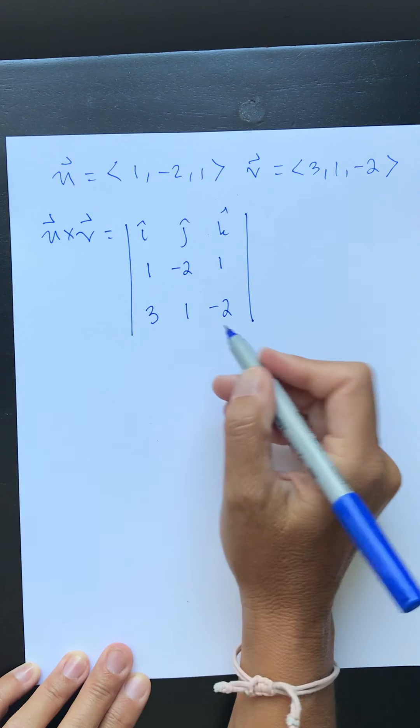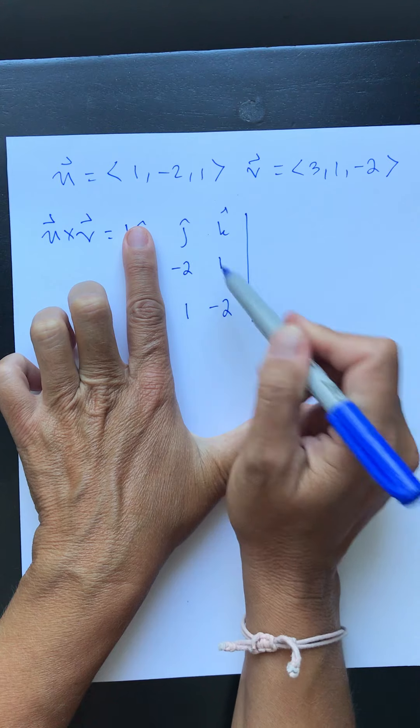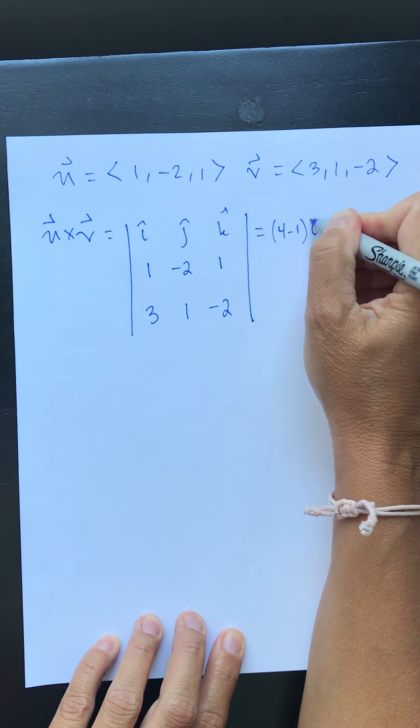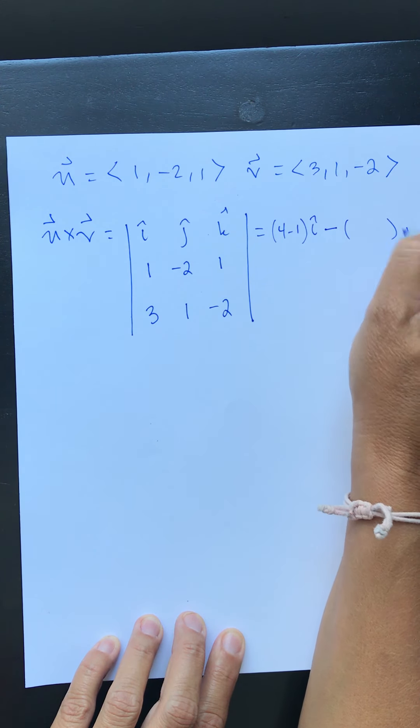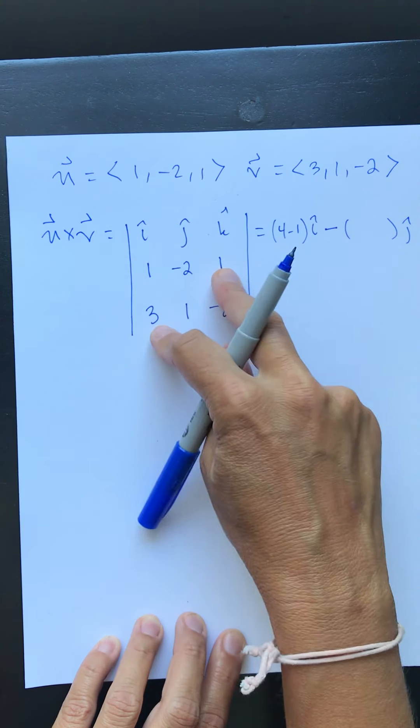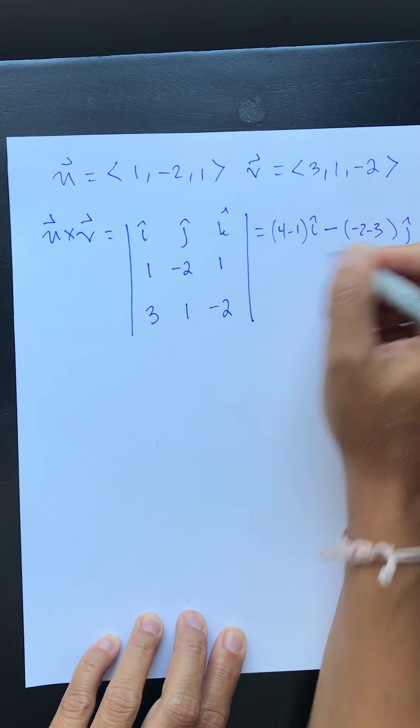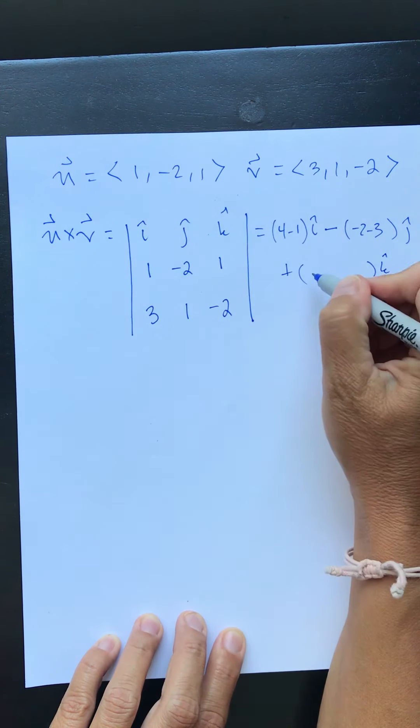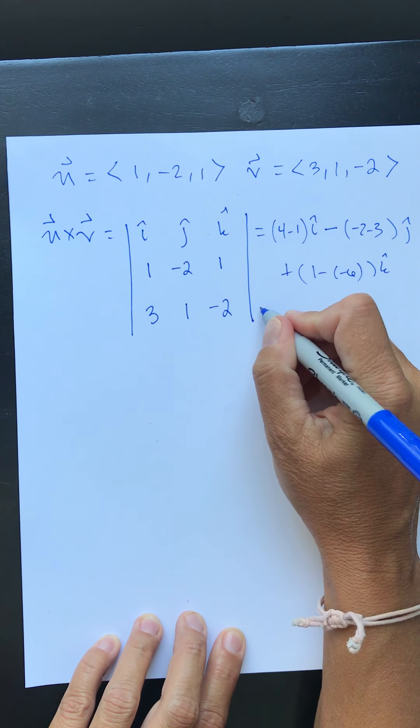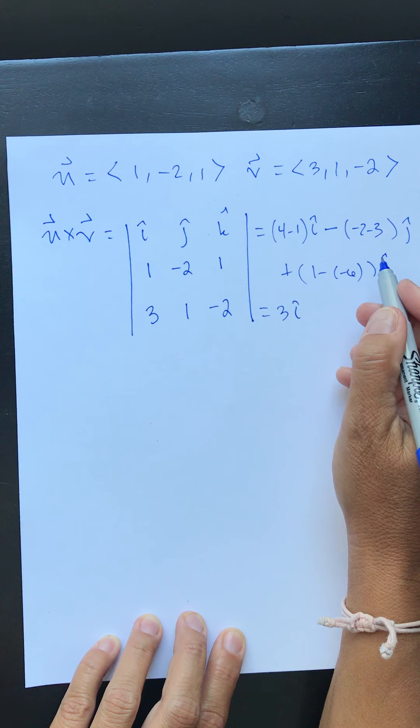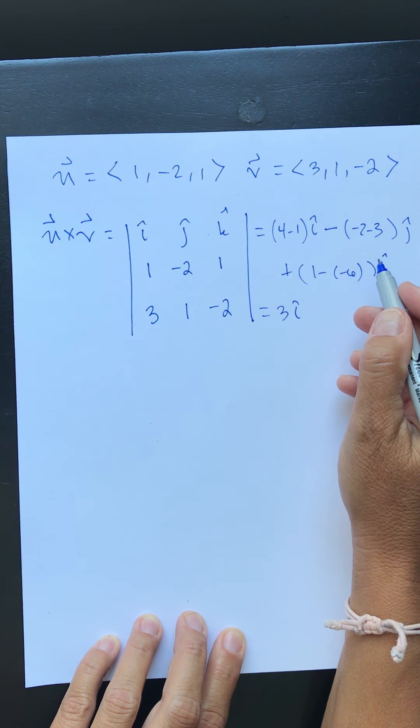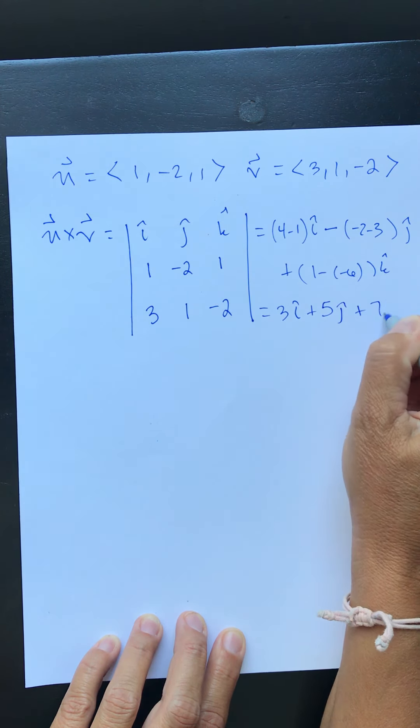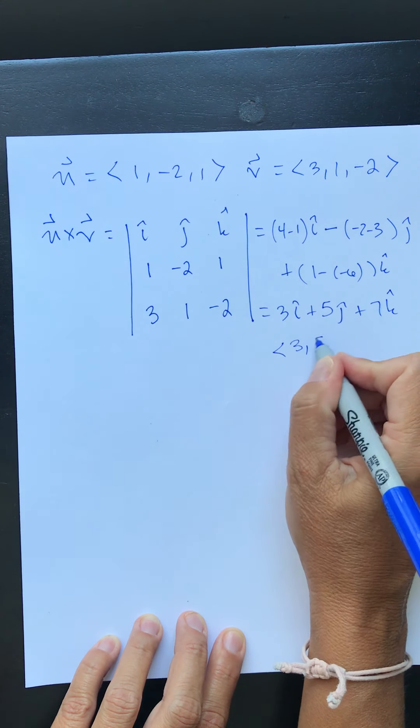All right, so to find my i hat component I'm going to cross out this column and I'm going to get negative two times negative two, so four minus one, four minus one i hat. Minus I'm going to cross out this one for my j hat and I get negative two minus three j hat. Plus for my k hat I'm going to cross out this column and I get one minus negative six. So my vector is three i hat, negative five, negative negative five, I got this plus seven k hat. Component form is going to be 3, 5, 7.